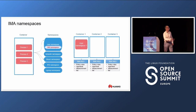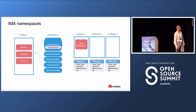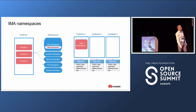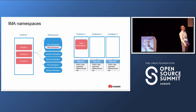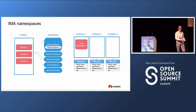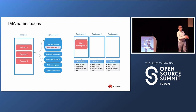In a nutshell, this is how it looks. We have a user namespace related to an IMA namespace. There is no way to create an IMA namespace without a user namespace. Each container will have its own IMA policy rules, appraisals, and so on — something very similar to what you have with a real hardware server, but in containers.